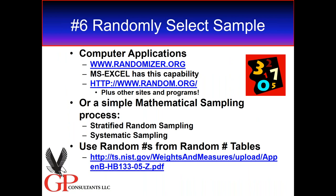How do you select that sample? Most of the folks I've talked to from my classes and various workshops use a website called randomizer.org, which allows you to provide that specificity. Microsoft Excel has a methodology to select random numbers. Random.org is another site. You can use a simple mathematical sampling process — either stratified sampling or systematic sampling. There are also random number tables; I have the link displayed there with NIST, which provides standard random number tables. Virtually every statistics textbook at the end has random number tables.